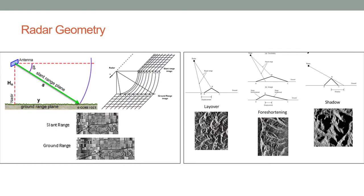Radar geometry: radar is a side-looking sensor such that if the platform was flying into the screen, it would be doing remote sensing with radar looking off to the side at 90 degrees to the direction of motion. The green arrow represents the slant range plane, and then you can see the ground range plane being imaged. A slant range image is taken first and then processed to give the actual ground range image. Radar also has certain artifacts known as layover, foreshortening, and shadows, all discussed in greater detail in the readings.